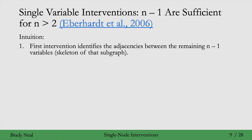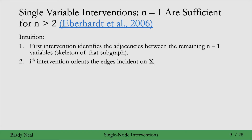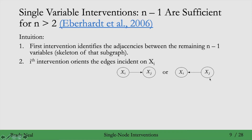The intervention that intervenes on the i-th variable is called the i-th intervention. Importantly, the i-th intervention orients all of the edges that are incident on the i-th variable xi. Consider the variables xj that we know xi is adjacent to. From step one, we've learned that xi is adjacent to xj, so we know that either we have an edge from xi to xj or from xj to xi. For all edges not adjacent to xi, we've already determined there's no edge there.